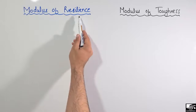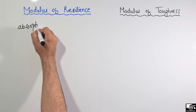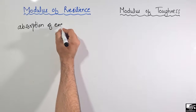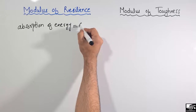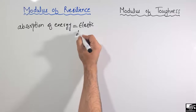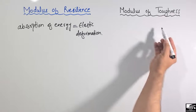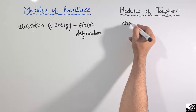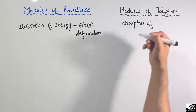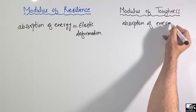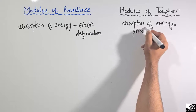First of all, what is the modulus of resilience? It is basically the absorption of energy in elastic deformation. The modulus of toughness, on the other hand, is the absorption of energy in plastic deformation.